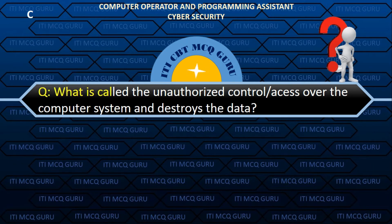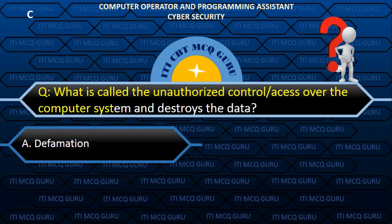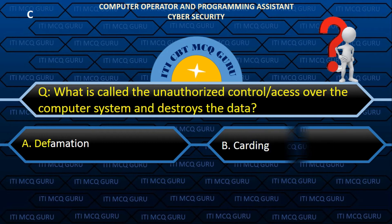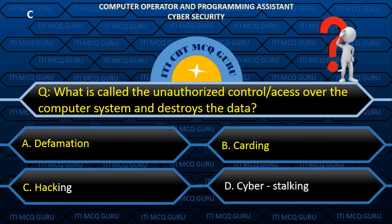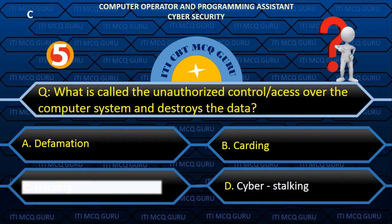What is called the unauthorized control and access over a computer system that destroys the data? Answer: C. Hacking.